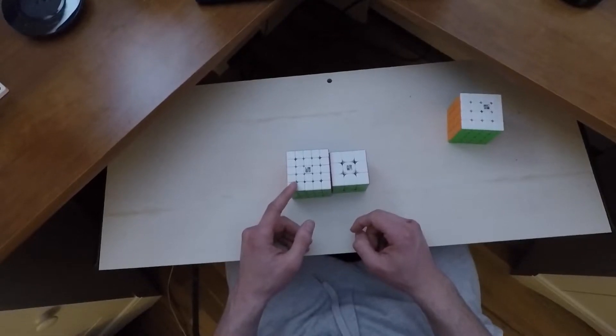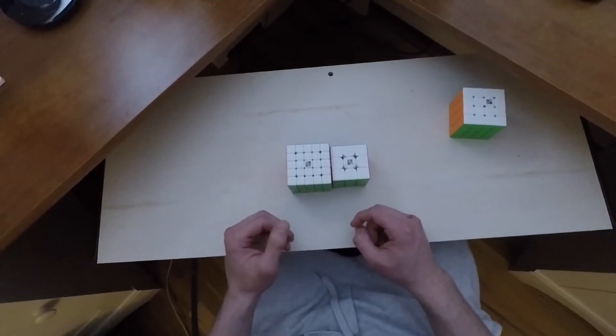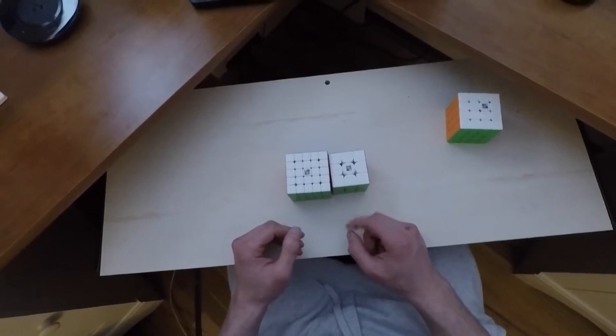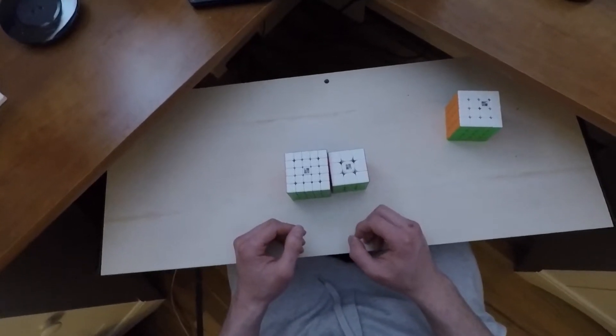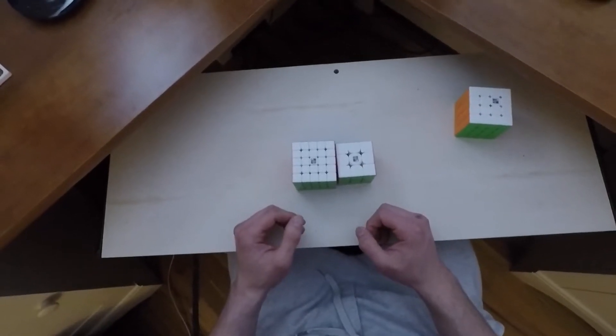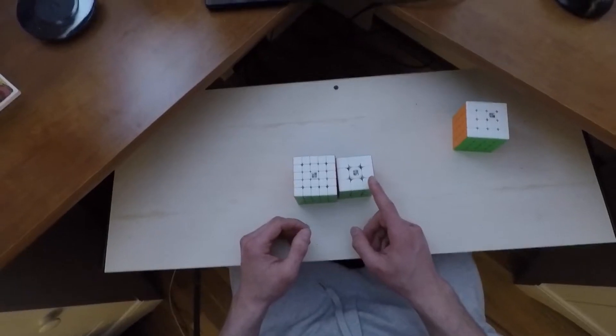I was able to get some pretty good times with this - some like 58 averages of 5 and like low 59 averages of 12 on the 5x5. For this 3x3, I was able to get some low 7 averages of 5 and like mid 7 averages of 12. So nothing bad by any means, but obviously nothing crazy for me.